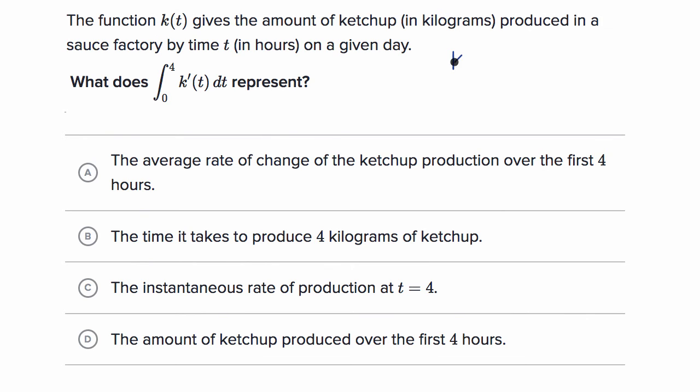Well, k(t) is the amount of ketchup as a function of time. So k'(t), that's going to be the rate at which our amount of ketchup is changing as a function of time. But once again, when you're taking the area under the rate curve, that tells you the net change in the original quantity, in the amount of ketchup. And it's the net change between time zero and time four. So let's see which of these choices match up to that.